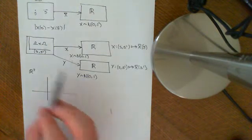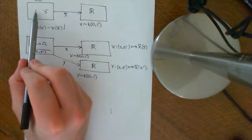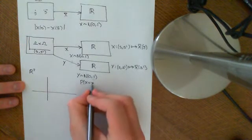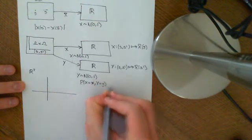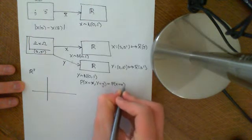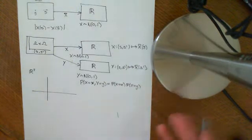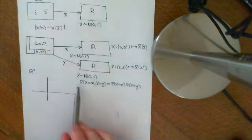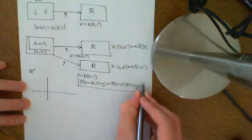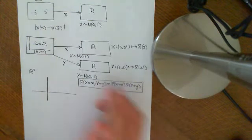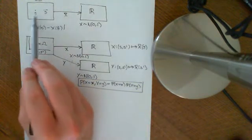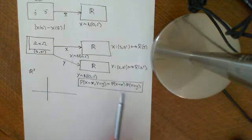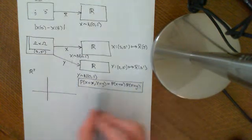Because the two picks are independent — the first outcome you pick doesn't affect the second — the probability that X equals little x and Y equals little y factors as the probability that X equals little x times the probability that Y equals little y. We are insisting that this is true: these two random variables are independent. The first pick is independent of the second, and the second independent of the first. That's the mathematical meaning of independence here.